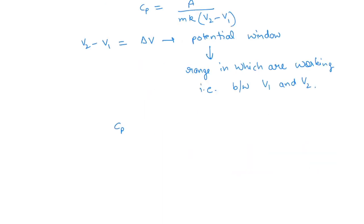So we get our specific capacitance expression as cp equal to A divided by m times k times delta V.